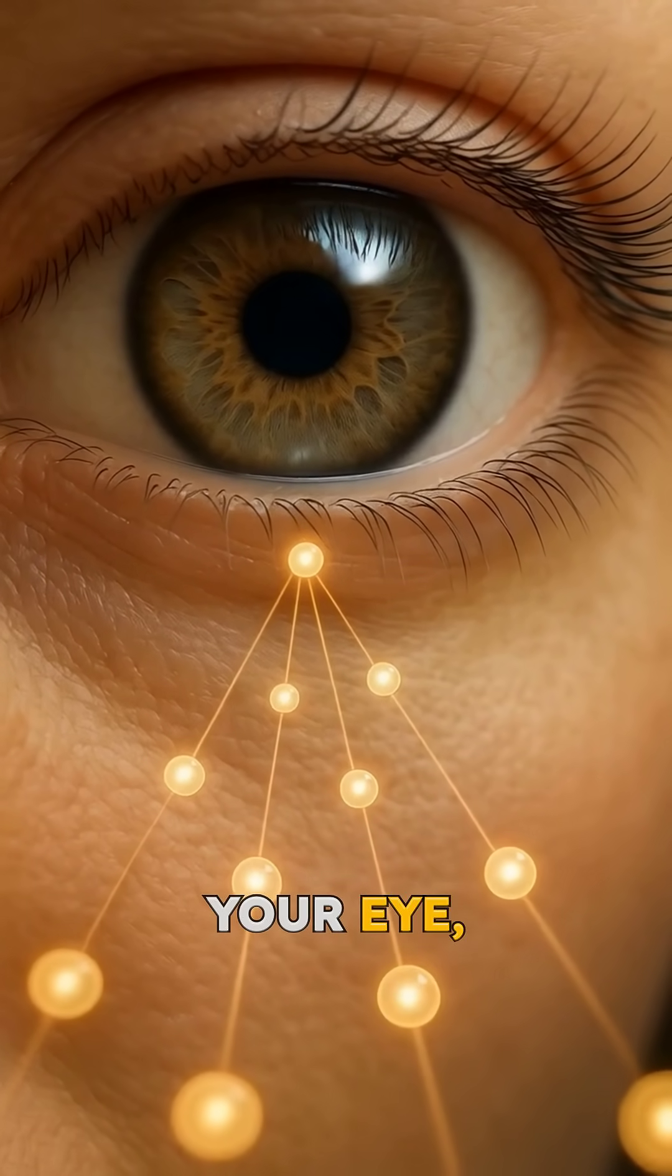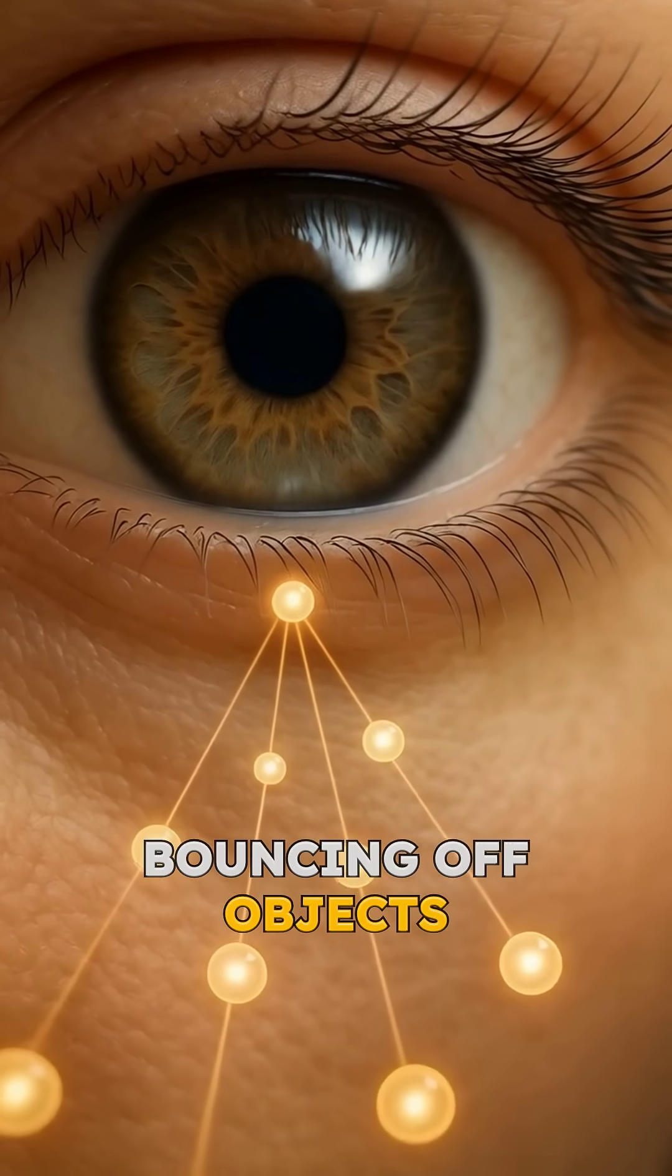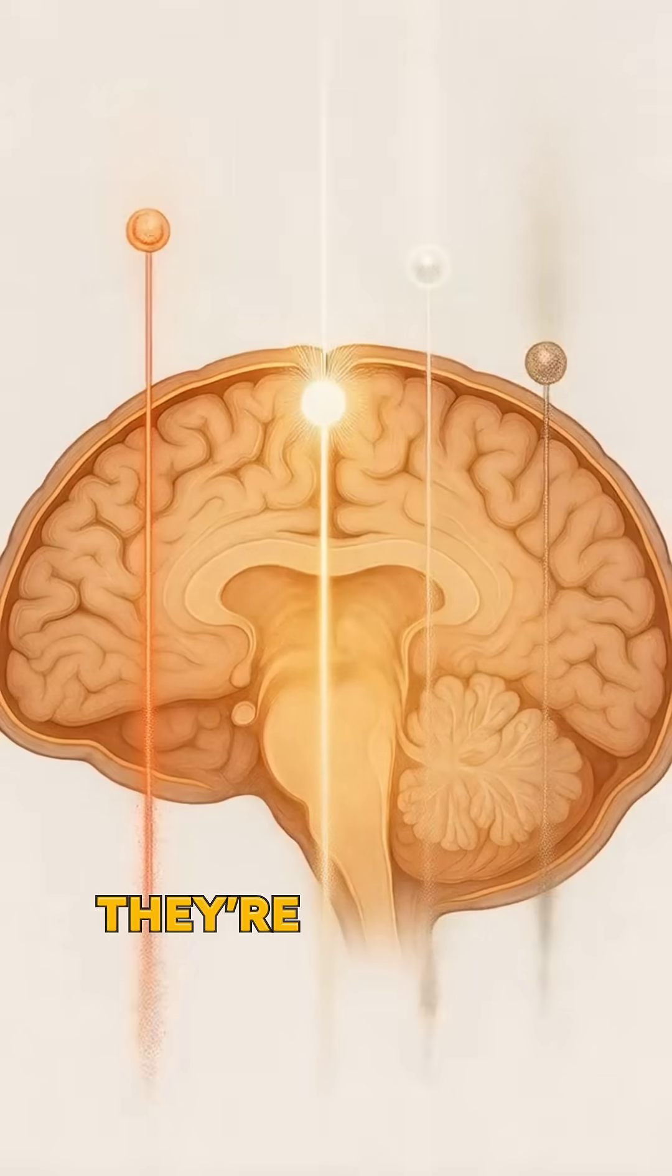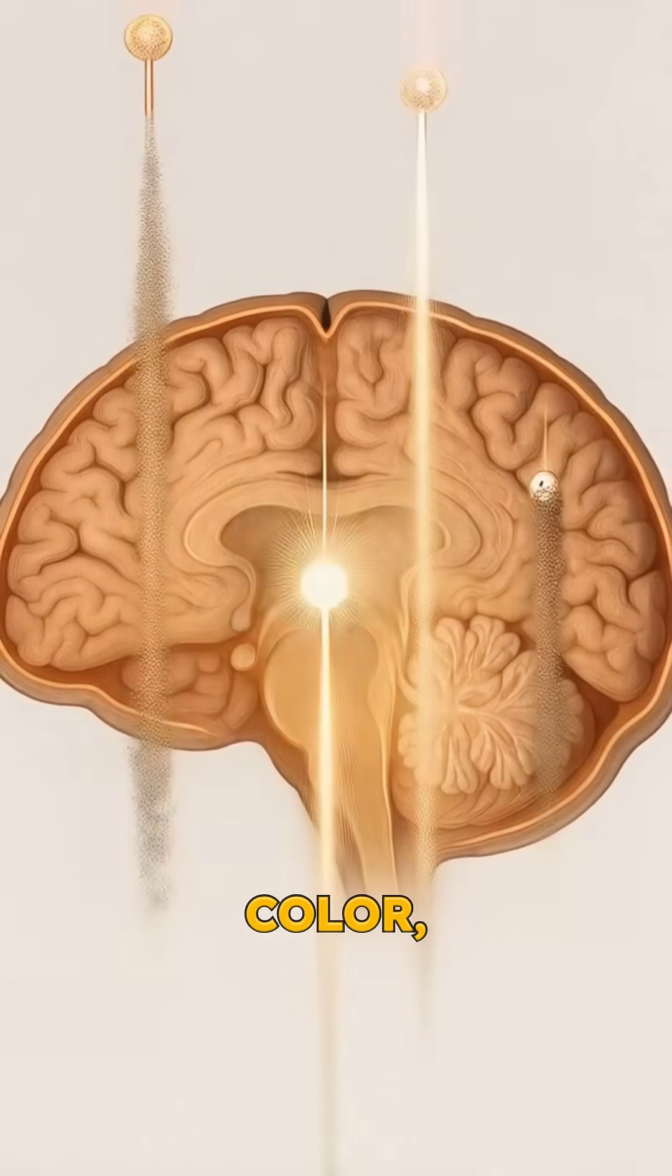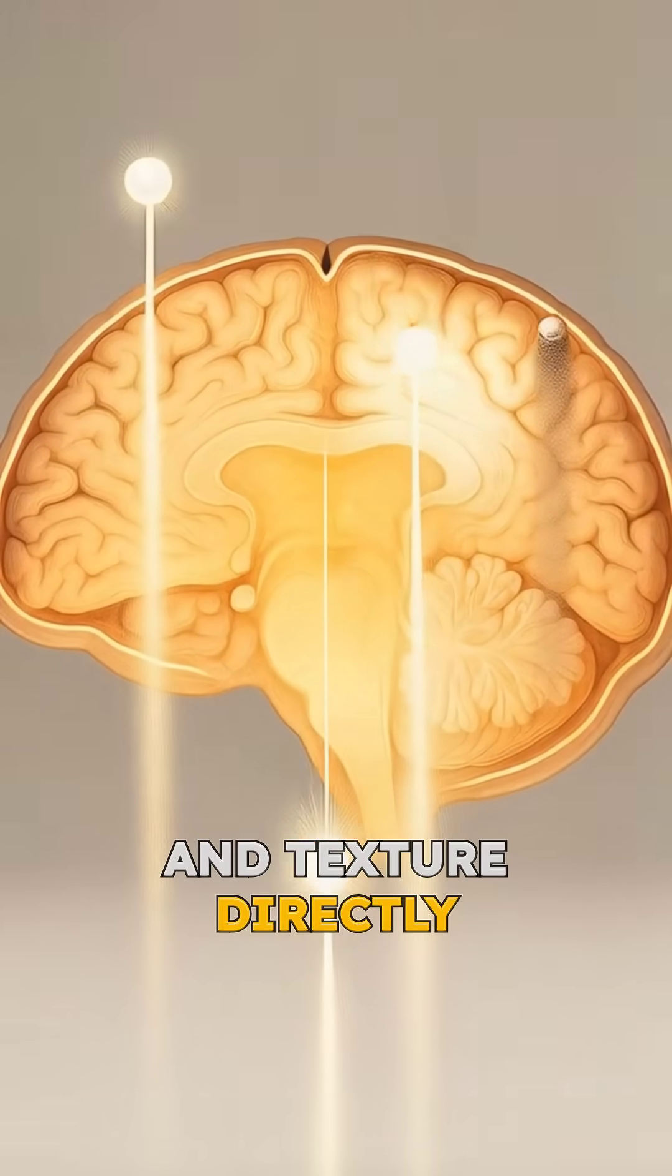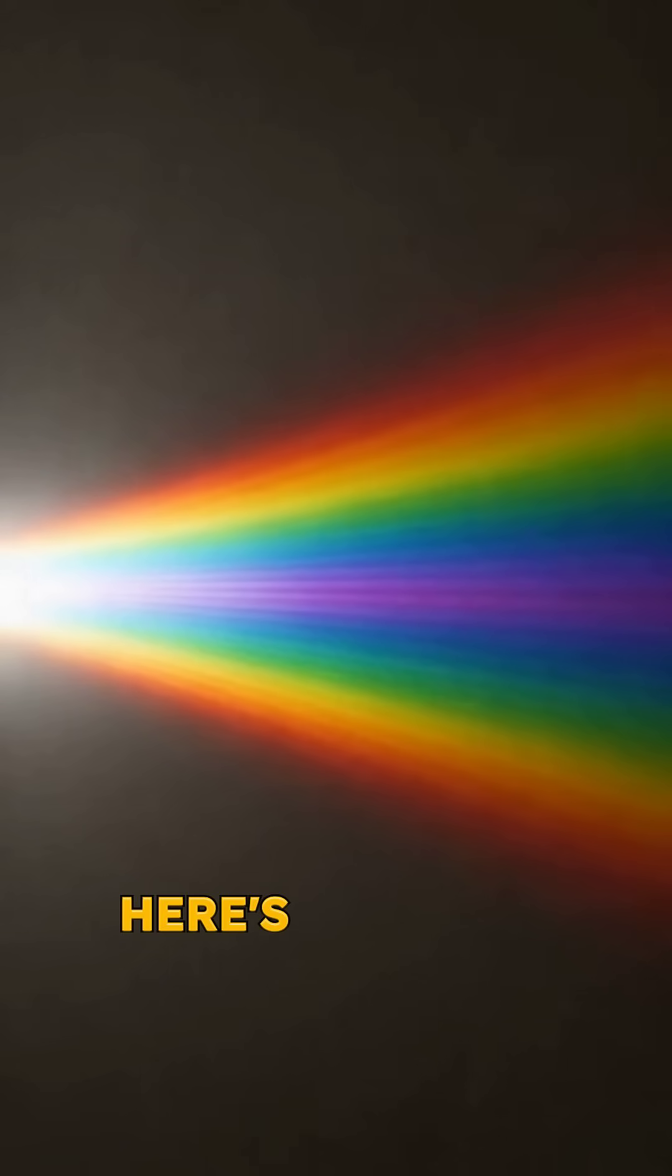When photons hit your eye, they're not just bouncing off objects randomly. They're carrying information about color, brightness, and texture directly to your brain. Here's the wild part.